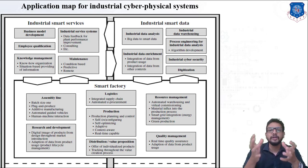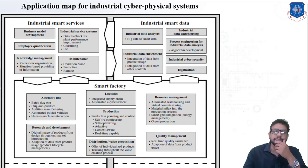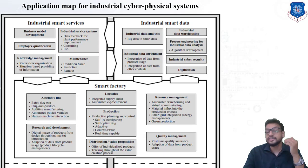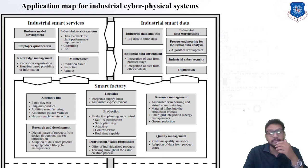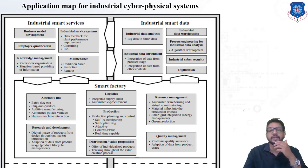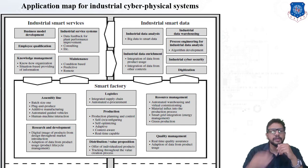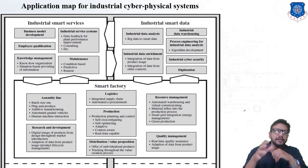Under a smart factory, as you can see on screen, it includes the assembly line, research and development department, logistics department — that is the storage department — production department, distribution department, resource management, and quality inspection department, that is quality management. These are all the parts which come under a smart factory.